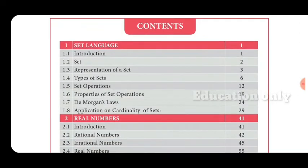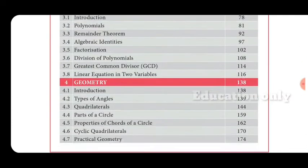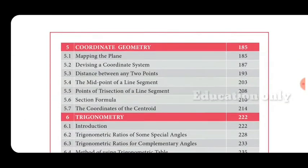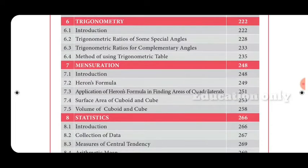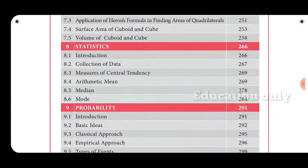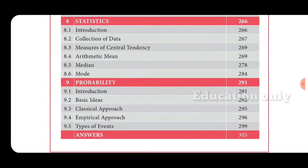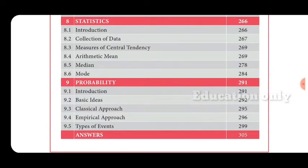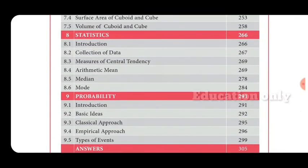The topics are set language, real numbers, algebra, geometry, trigonometry, statistics, and probability. There are 9 chapters in total, but the first section has 8 chapters.